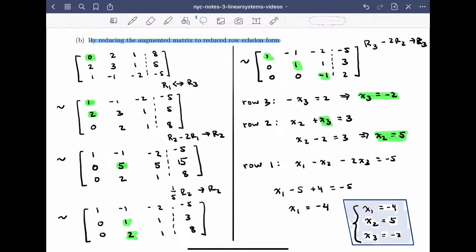For part b, we want to continue the reduction process all the way to reduced row echelon form. We don't need to redo all our steps, so I'll copy the last version of the matrix that we had before we solved.